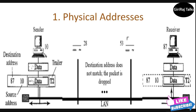For example, Ethernet uses a 6-byte (48-bit) physical address that is imprinted on the network interface card. A LocalTalk, which is Apple, however, has a 1-byte dynamic address that changes each time the station comes up. For example, as shown in the diagram, a node with physical address 10 sends a frame to a node with physical address 87. The two nodes are connected by a link using bus topology LAN. At the data link layer, this frame contains physical addresses in the header — these are the only addresses needed. The rest of the header contains other information needed at this level, and the trailer usually contains extra bits needed for error detection.